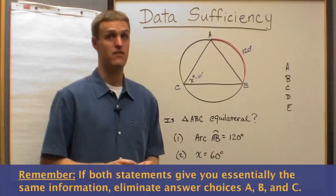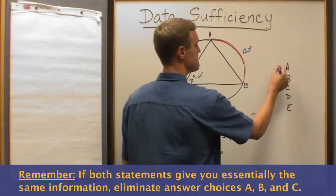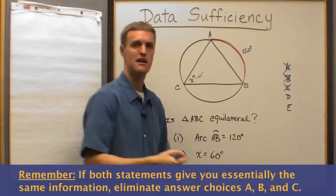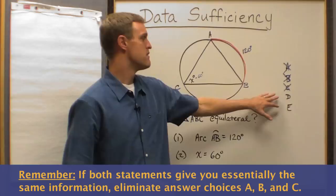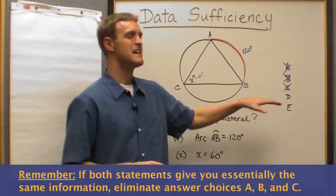In some questions it's more obvious, in other questions it's a little bit more difficult. But once you realize, you immediately can cross off answer choices A, B, and C. So this is essentially another elimination rule for you, that if it's the same information, they're either both individually going to be enough information to answer the question, or neither of them will be enough.